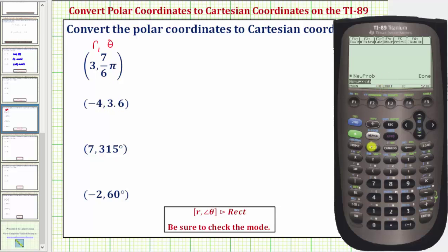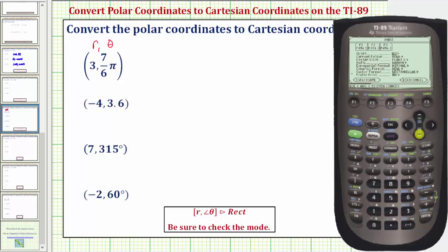To change the mode, we press the mode key and in the fourth row we can change the angle from radian to degree. If we press F2 at the bottom, this is where we would change the mode from exact, automatic, or approximate.